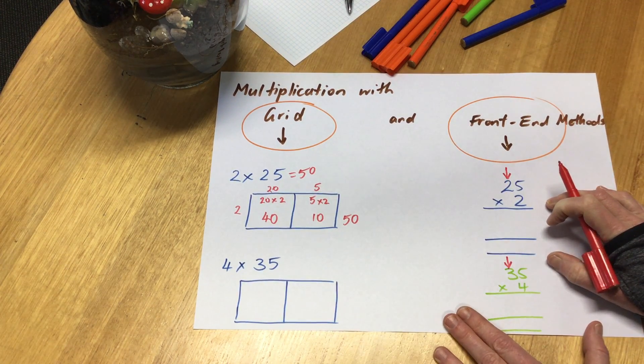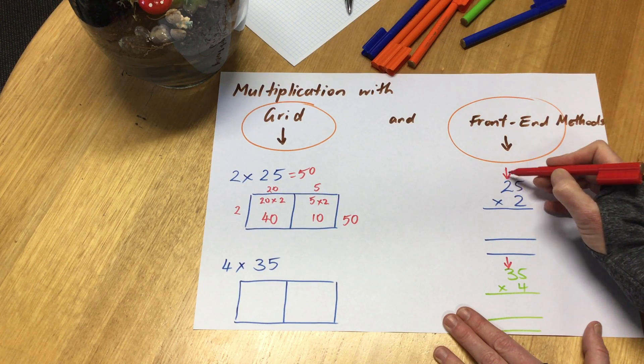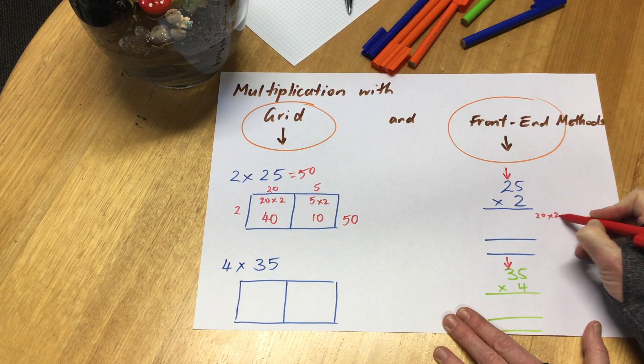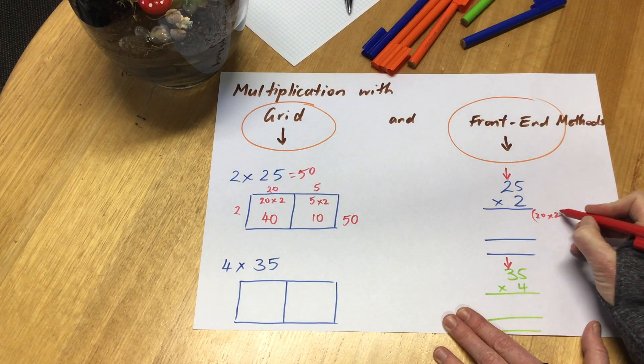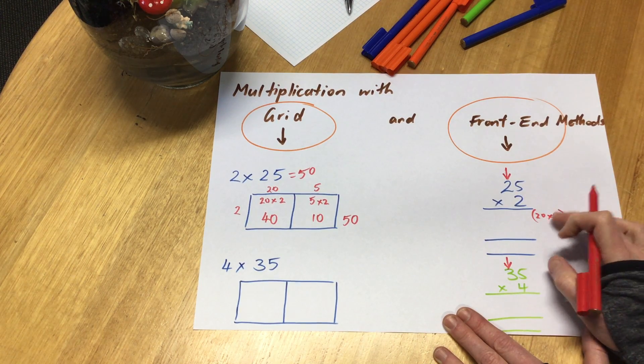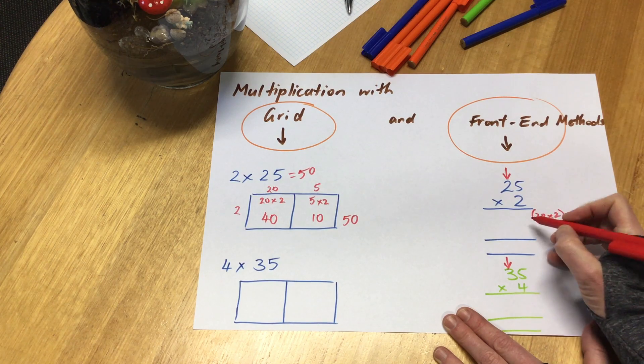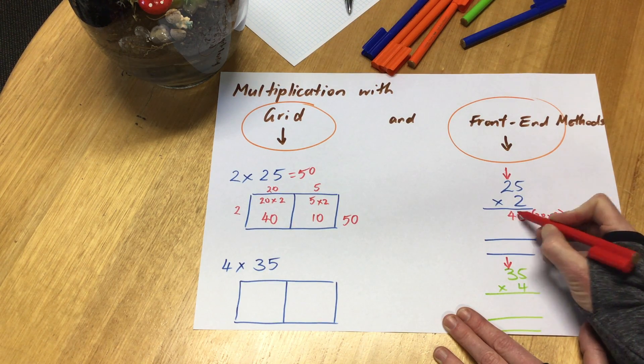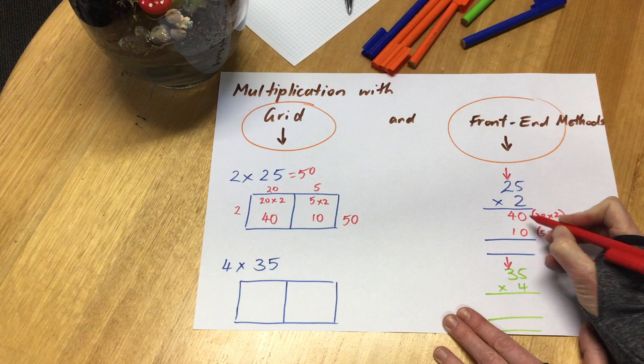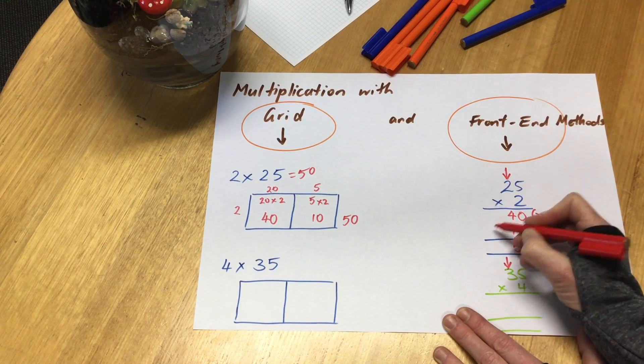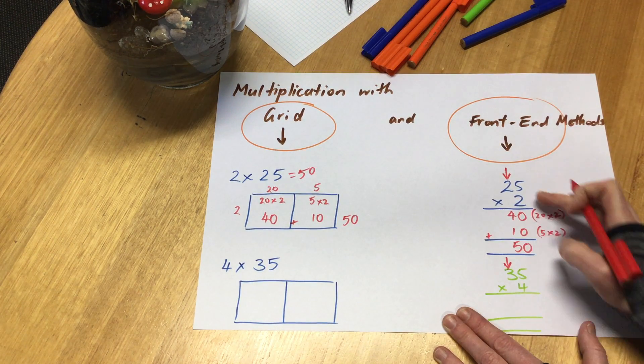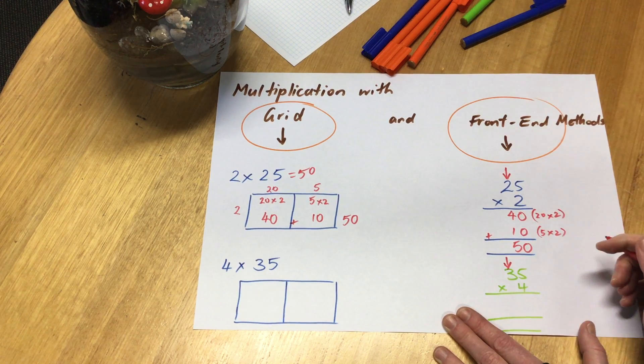Let's check it with the front-end method. Front-end method means we start at the front, so I've got 20 and I'm going to multiply it by 2. 20 multiplied by 2, double 20 is 40, and then I've got 5 times by 2, which is my 10. Notice that we add together these ones once we've done the multiplying, to find out what we've got. 50.